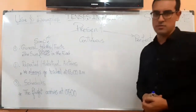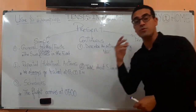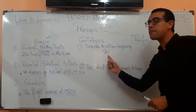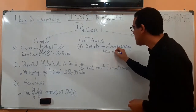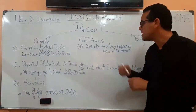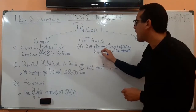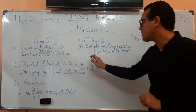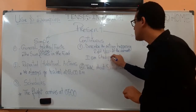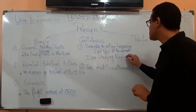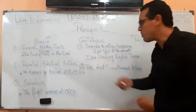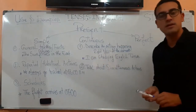Now let's go to the present continuous. The present continuous is used to describe two actions or situations. Number one: to describe an action happening now — at the moment of speaking. For example: I am teaching English tenses. That is what is happening at the moment.